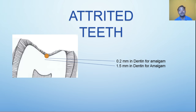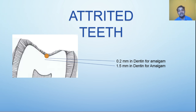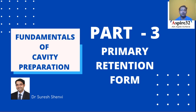For attrited teeth where enamel is lost, students may think entering 0.2 mm into dentine is sufficient — but that is wrong, because the amalgam thickness placed would then be too little. In an attrited tooth you must ensure the minimum amalgam thickness of 1.5 mm is achieved. For composite, entering the dentine is not required.